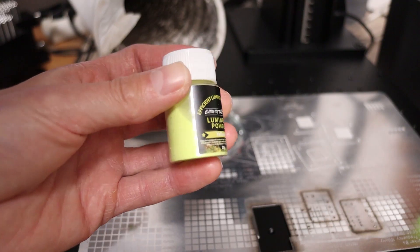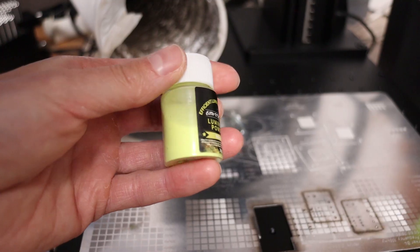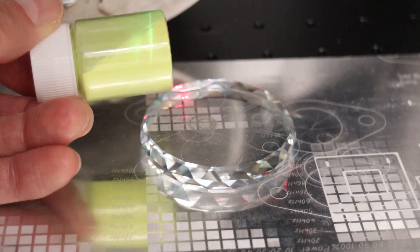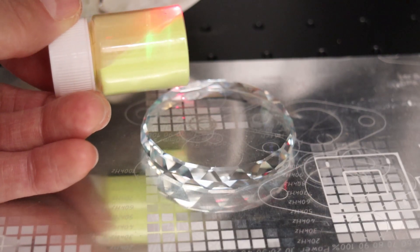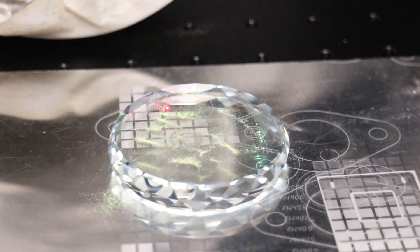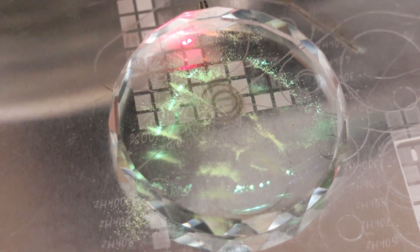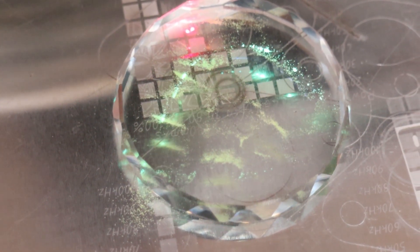One of my subscribers suggested another great solution. Luminous powder that glows when activated by UV light. Just apply a thin layer with a soft brush and you'll get a clear preview. I'll leave a link to the powder in the video description if you want to try it yourself.